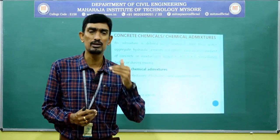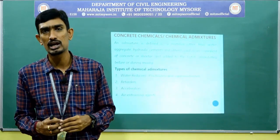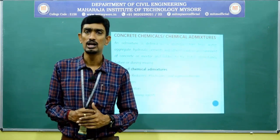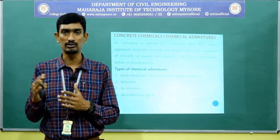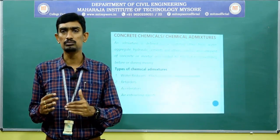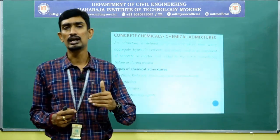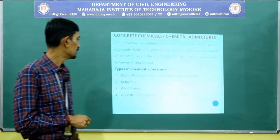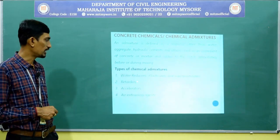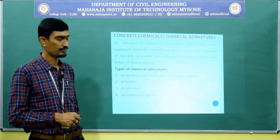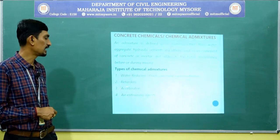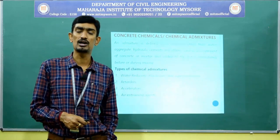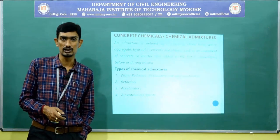Mainly these admixtures will be used as water reducing agents. By reducing the water, you can enhance the compressive strength of concrete and other properties. Admixtures also directly influence the workability of concrete. The different types of chemical admixtures are: water reducers — that is plasticizers and superplasticizers — retarders, accelerators, and air entraining agents.